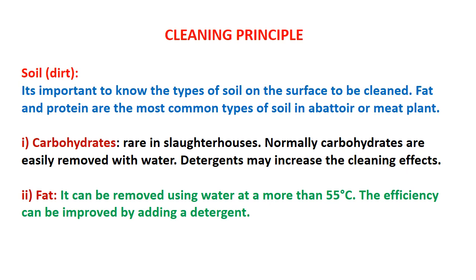Let us understand the principle of cleaning. Cleaning depends on the type of dirt or soil, and accordingly the approach of using detergents or sanitizers will vary. Fat and protein are the most common types of soil in an abattoir or meat plant. We need to decide about the use of different kinds of detergents accordingly. Sometimes there can be carbohydrates, but in case of a slaughterhouse it is rare.